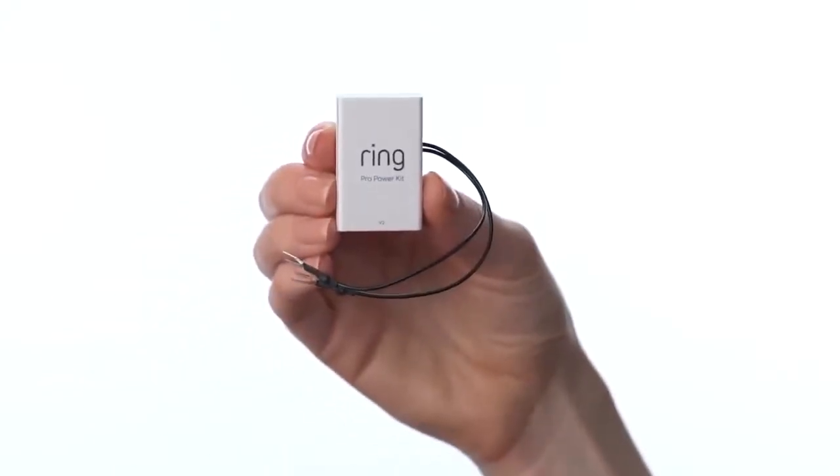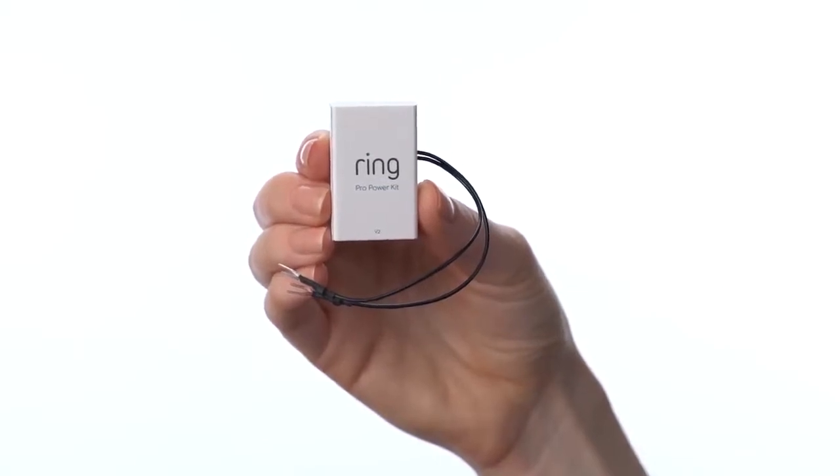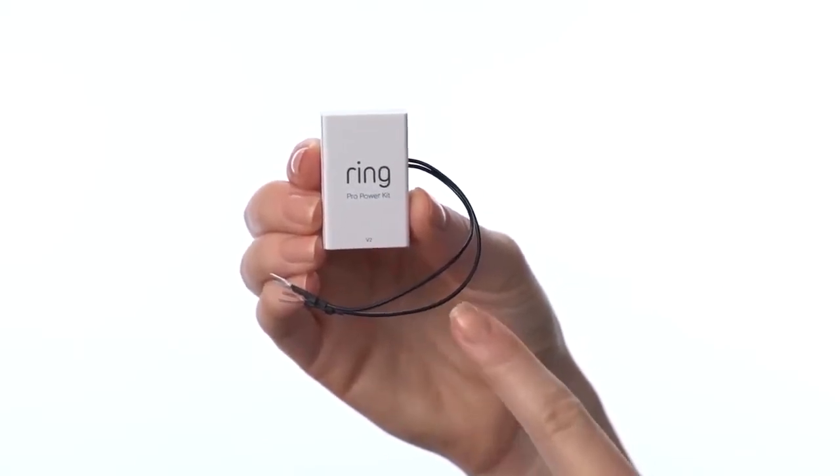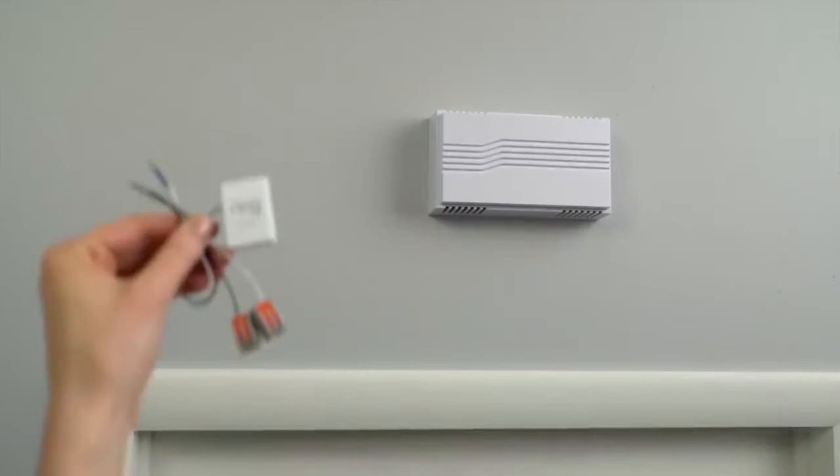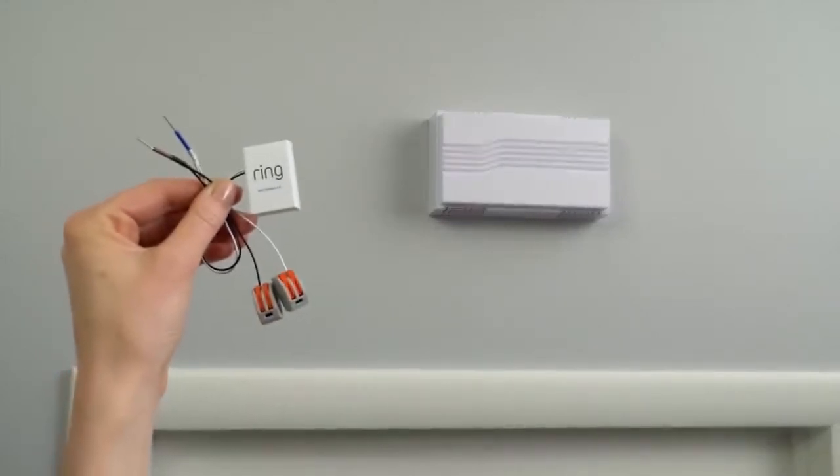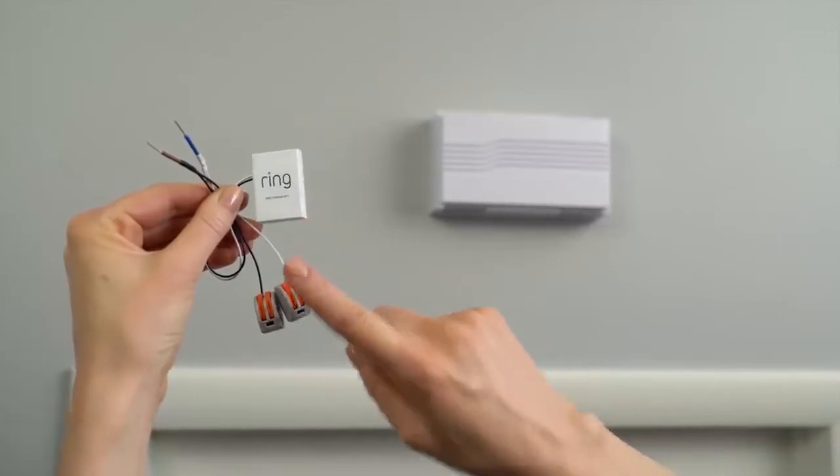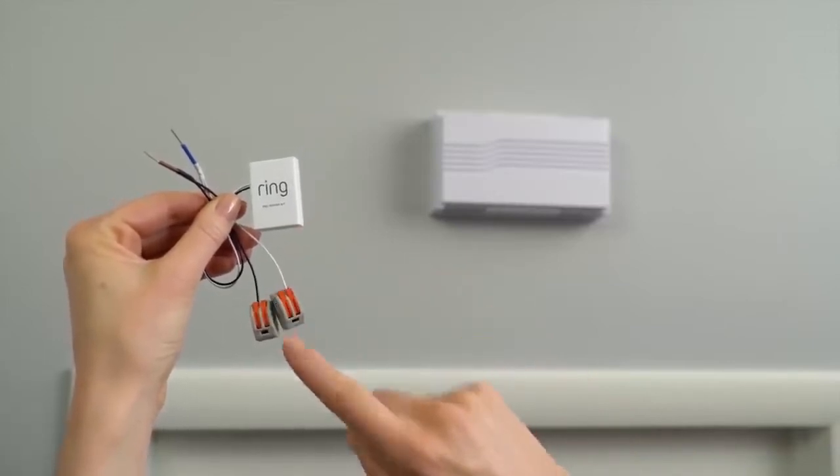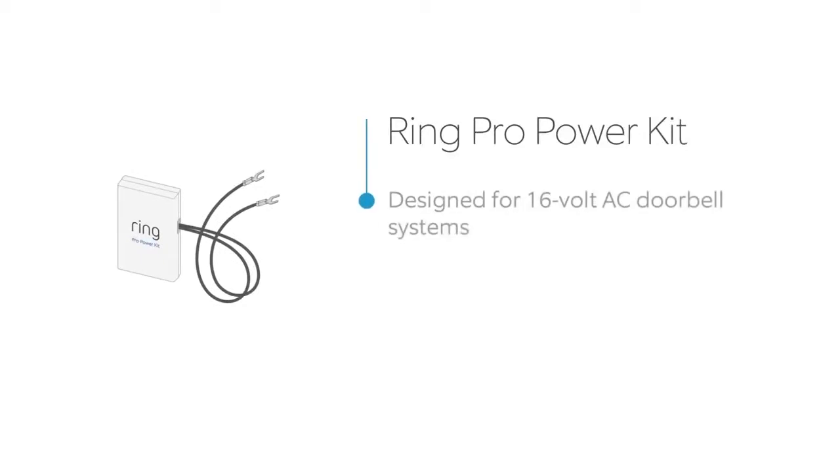The Pro Power Kit ensures that your Ring Video Doorbell Pro receives the power it needs for the best performance. The instructions in this video apply to this version of our Pro Power Kit. If your Pro Power Kit looks like this, the install process is slightly different. Check the included Install the Pro Power Kit User Manual for details. The Pro Power Kit is made for use with 16V AC doorbell systems, as used in the USA.